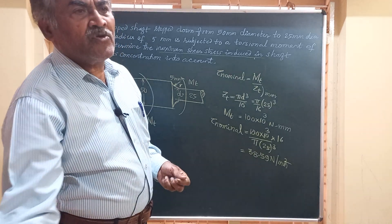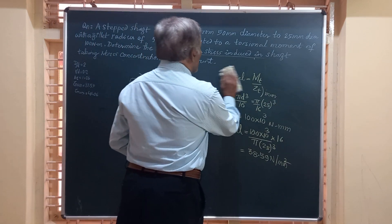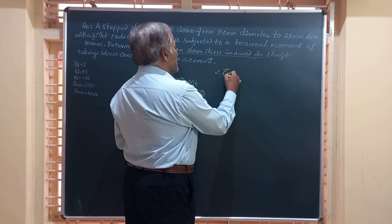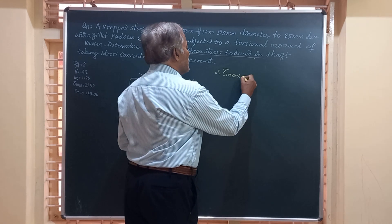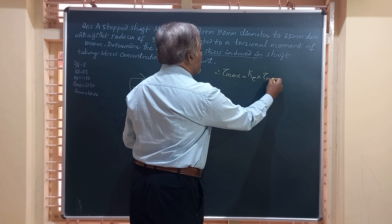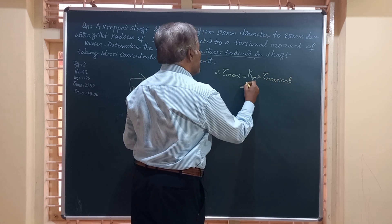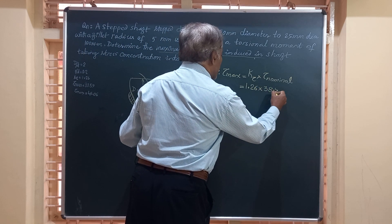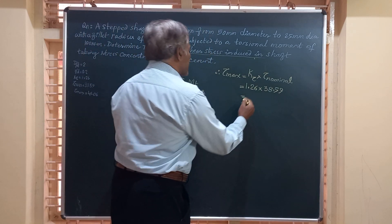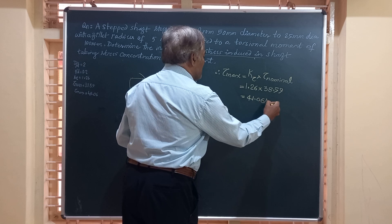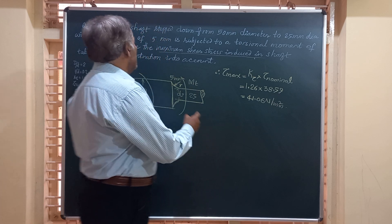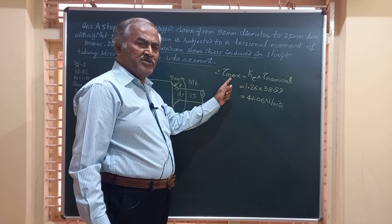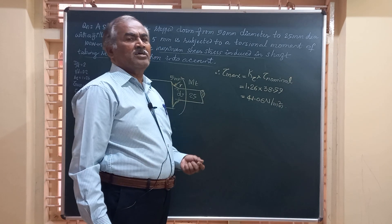We have the value of tau_nominal and the value of K_tau, and multiplying these two gives the maximum shear stress induced in the member. Therefore, tau_max equals K_tau into tau_nominal, which is 1.26 multiplied by 38.59, and this product works out to 41.06 Newton per mm squared. This is the answer, accounting for stress concentration.